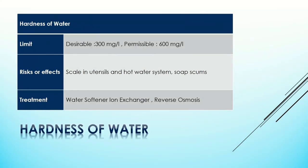Hardness of water: the desirable limit for hardness of water is 300 milligrams per liter, and the permissible limit is 600 milligrams per liter if there is no other source available. We can reduce the hardness of water by softening processes like the ion exchange process or reverse osmosis process.